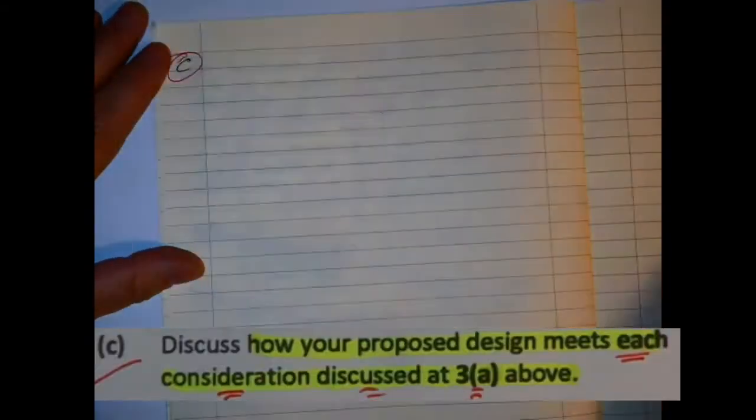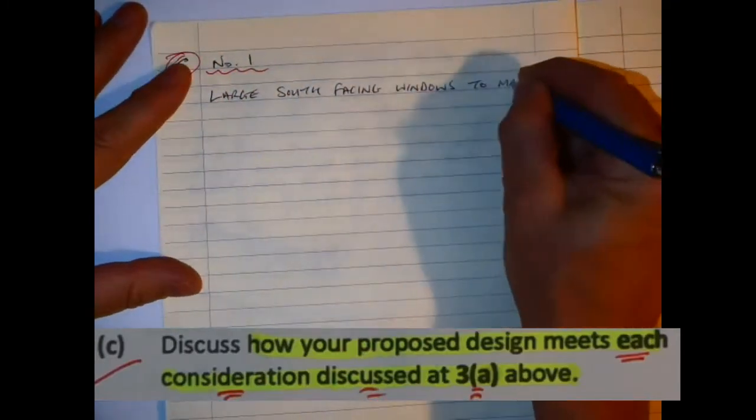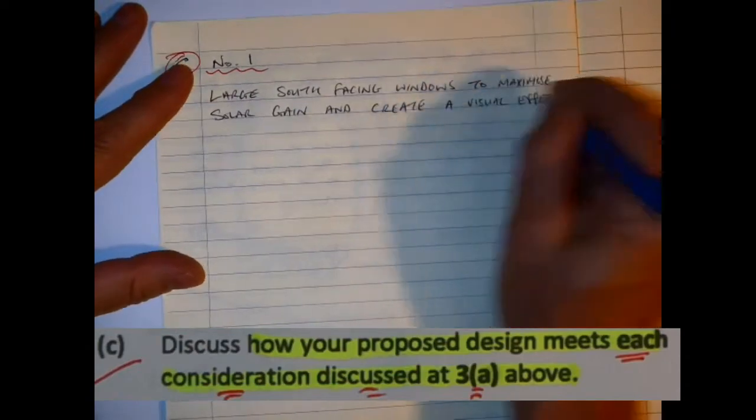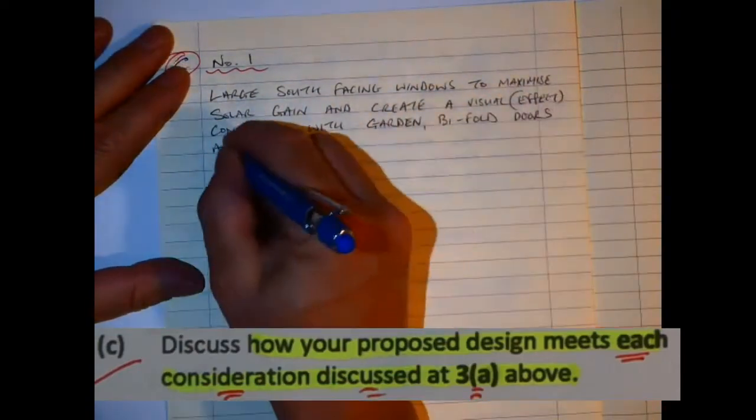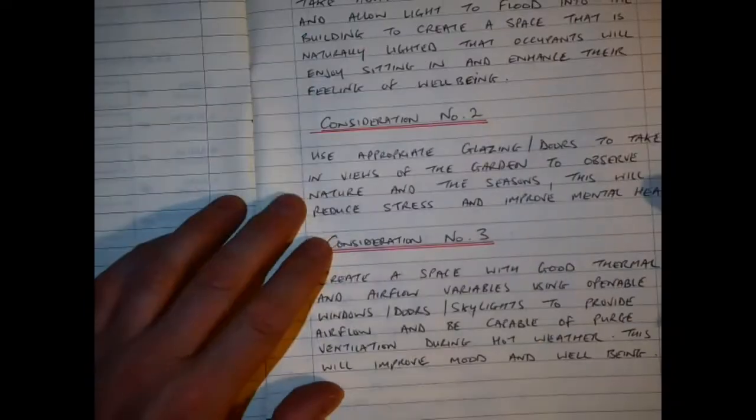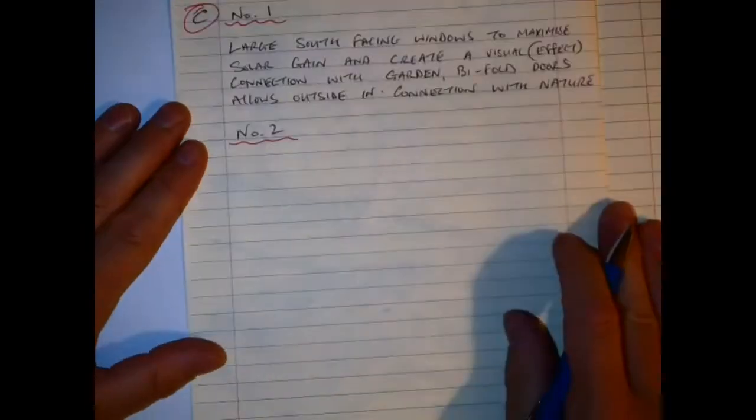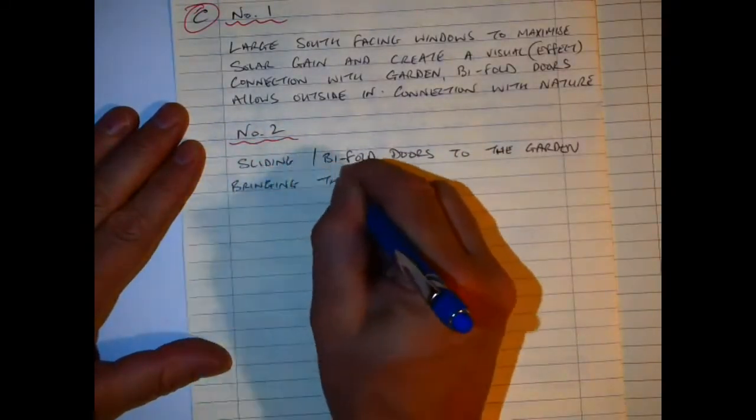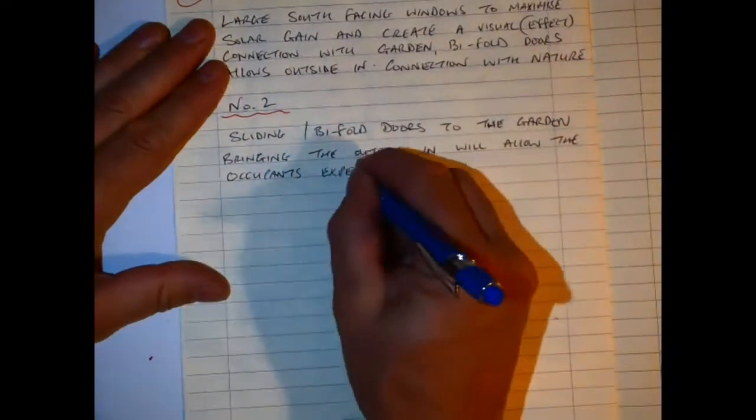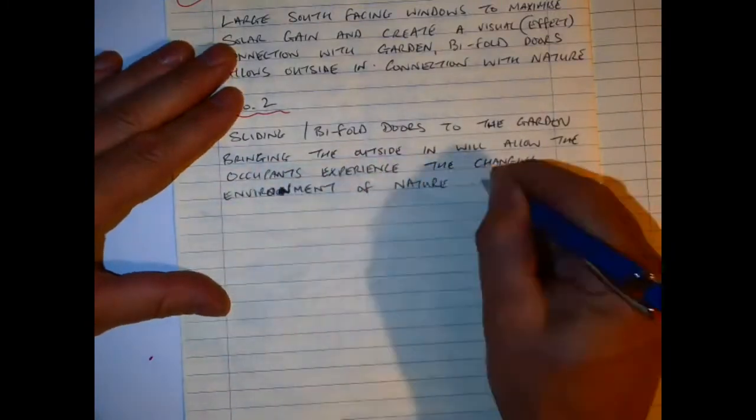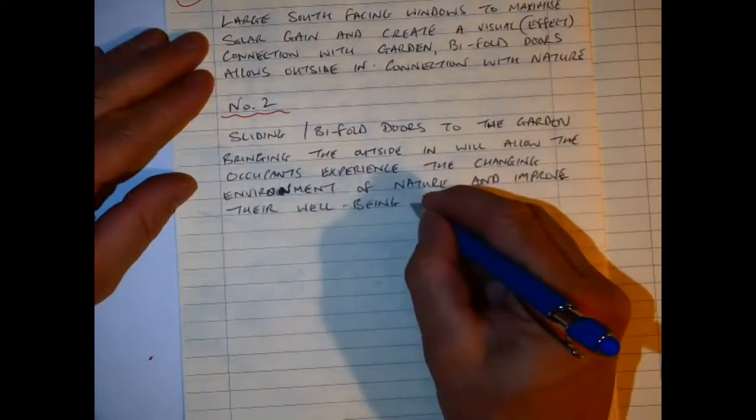Part C, I have to refer back to my original part of the question, the three considerations. For number one, the large south facing windows maximizing solar heat gain, a visual connection to the garden with bifold doors as can be seen in the sketch. For part two, I decided on bifold doors into the garden bringing the outside in, allowing occupants to experience the changing environment of nature and improve their well-being. Including water chains giving auditory and visual stimuli to create a sense of well-being.